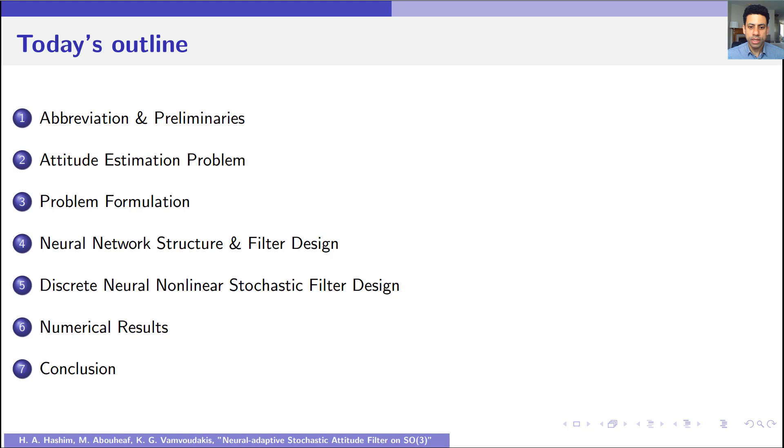Today's outline includes abbreviation and preliminaries. Next, I will present the attitude estimation problem, then move to the problem formulation. Next I will present the Neural Network Structure and the proposed filter design. To facilitate implementation at low sampling rate, I will present the Neural Based Stochastic Filter designed in discrete form. I will move next to numerical results, and finally conclude with a summary.